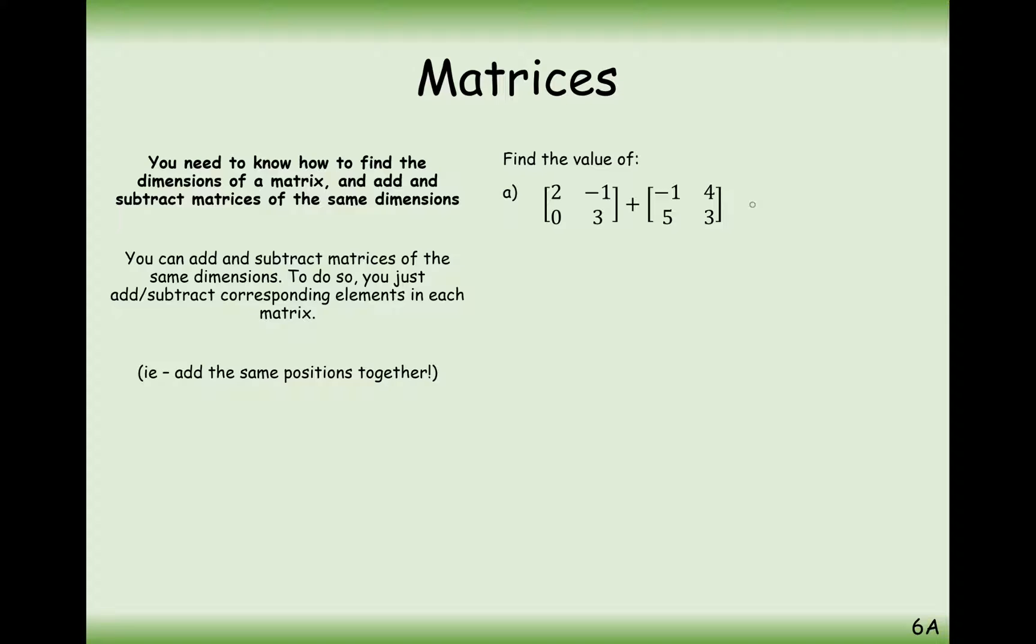And it's a simple process of just adding together the different elements that are in the same position. So adding together the top left two values we get 1. Adding together the top right two values we get 3. Adding together the bottom left values we get 5. And adding together the bottom right values we get 6. So it's really just as easy as that. Make sure you add the same positions together or subtract the same positions if it's a subtract question.